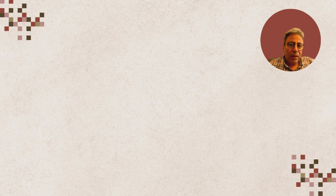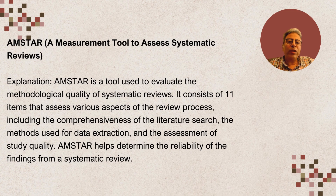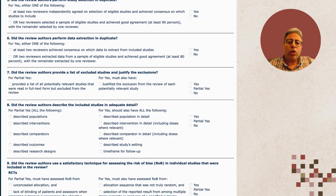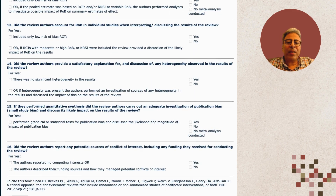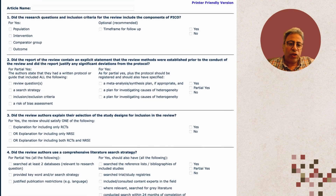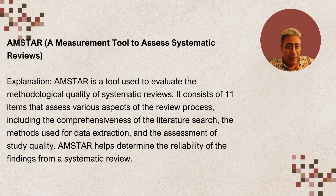There are different systems and softwares for different types of studies and concerns. For example, AMSTAR — A Measurement Tool to Assess Systematic Reviews — is specifically designed to evaluate the methodological quality of systematic reviews. It consists of 11 items that assess different aspects of the review process, including the comprehensiveness of the literature search, methods used for data extraction, and the overall quality assessment. AMSTAR helps determine how reliable the findings of a systematic review are.